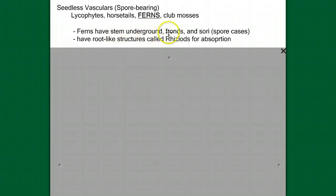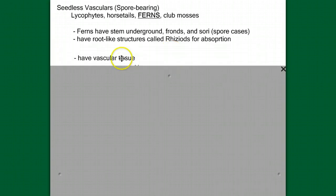Ferns have underground stems that run along laterally, horizontally, fronds, and we talked about the spore cases. Root-like structures called rhizoids for absorption. These are just general characteristics. They have vascular tissue.